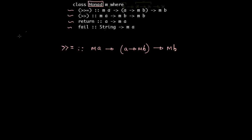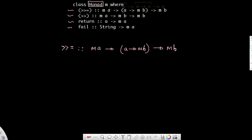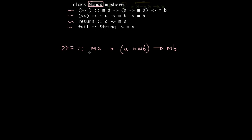Now I'm in a type signature. What you have learned is that in the type world, the kind for M A is basically a concrete type, so it has a kind of star. The kind for the function is also a concrete type. But within that function, A is something that is also a concrete type, and M B is something that also has a kind of star.